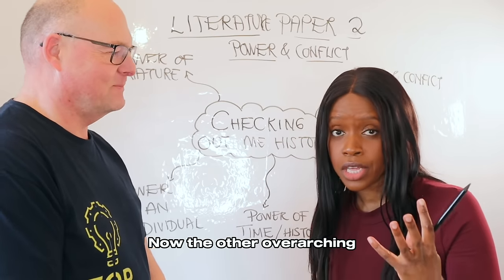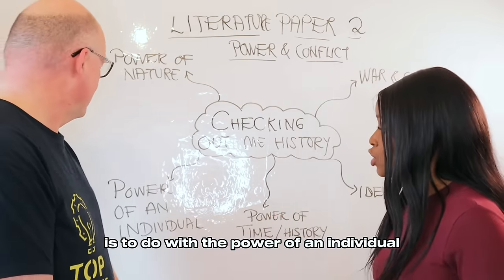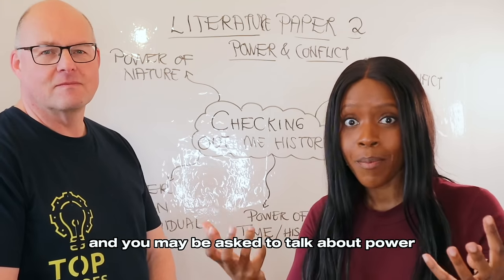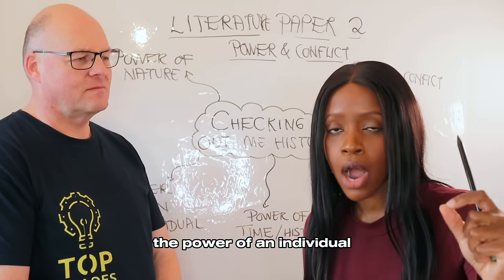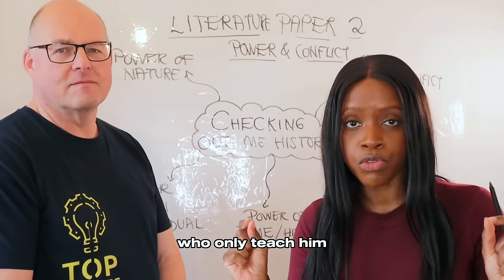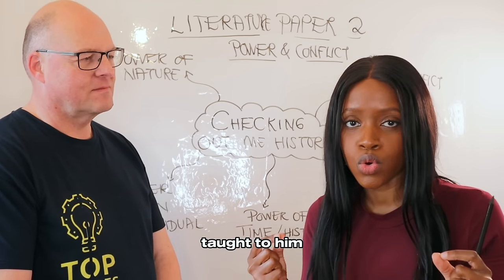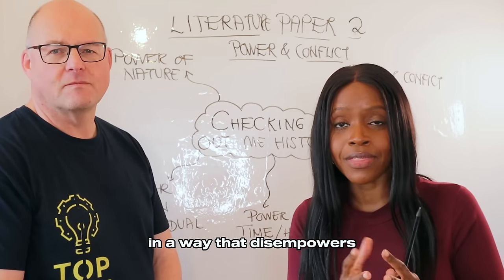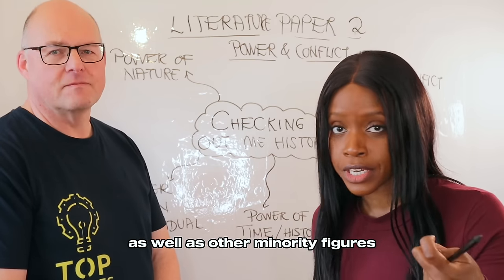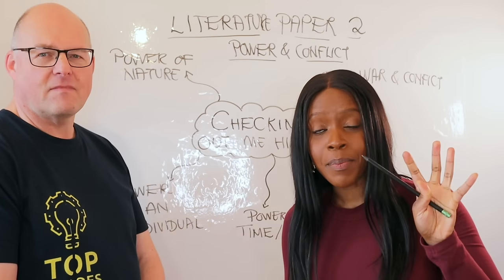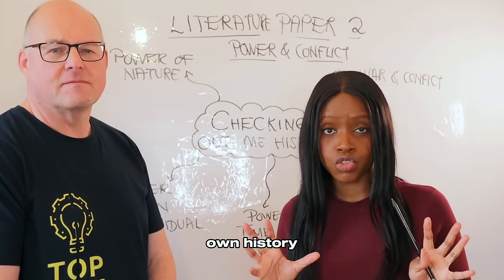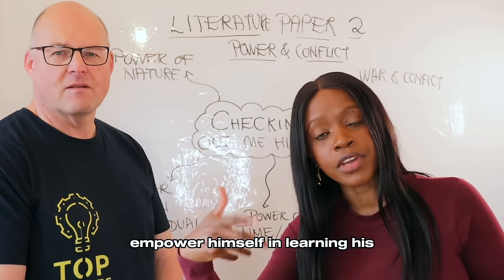The other overarching theme is the power of an individual. When it comes to 'Checking Out Me History' and a question about power, make sure you mention the power of an individual. The narrator feels disempowered by his teachers who only teach him European history, and any non-European history taught to him is presented in a biased way that disempowers and discredits the achievements of black figures as well as other minority figures.